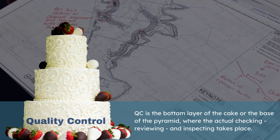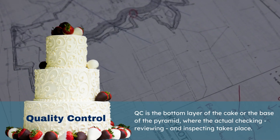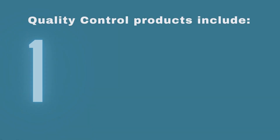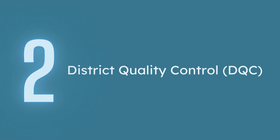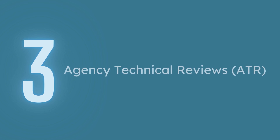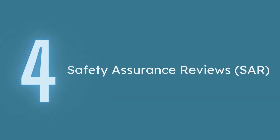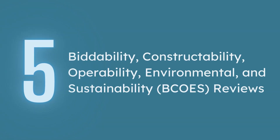Quality control, or QC, is the bottom layer of the cake, or the base of the pyramid, where the actual checking, reviewing, and inspecting takes place. Quality control products include internal PDT quality checks, district quality control or DQC, agency technical reviews or ATR, safety assurance reviews or SAR, and bidability, constructability, operability, environmental, and sustainability, or BCOES reviews.